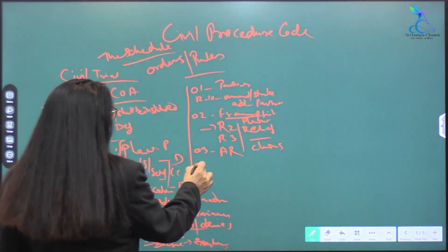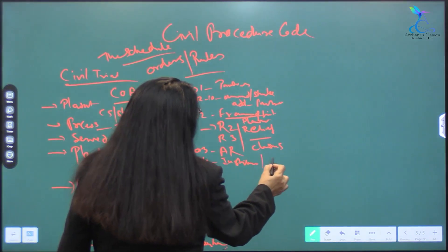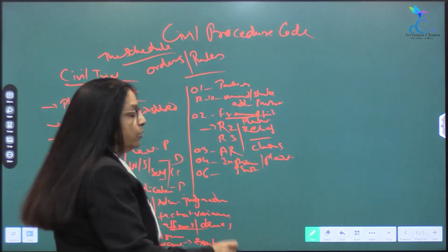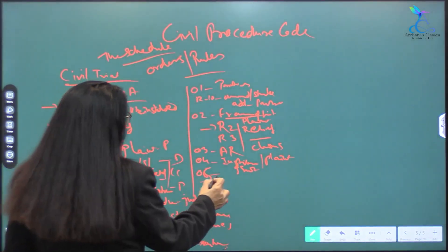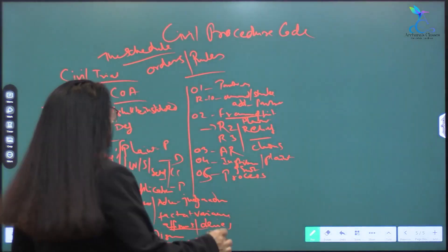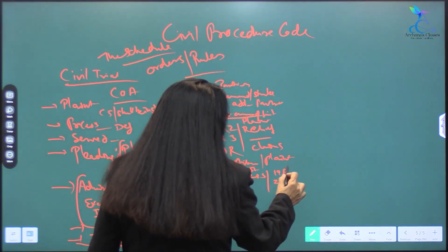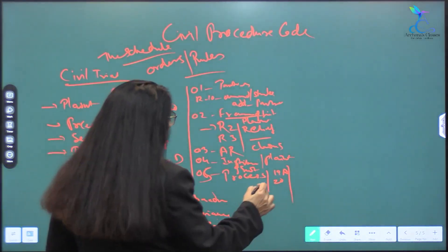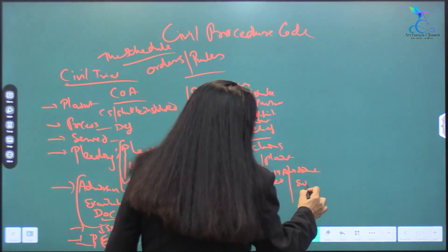Order 3 is relating to authorized representatives. If a party cannot come in person, they can come through an authorized representative. Order 4 is relating to institution of suit — institution of suit is filing of plaint. Order 5, when pleadings are complete and parties are determined, relates to process. For the other party, process will go. The important rules are 19A and 20. If ordinary process cannot reach the other party, then simultaneous process or substituted process.